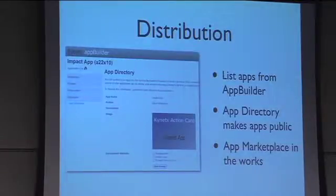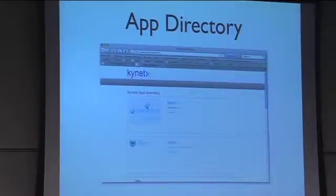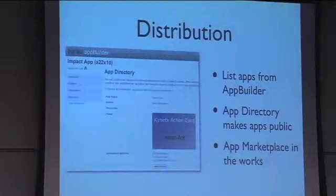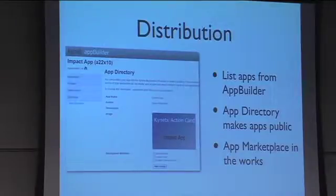A note about distribution: if you go to appdirectory.kinetics.com, this is our basic download site for Kinetics applications right now. Within App Builder you can select different distribution models as you're developing your application — you can say you want it published to App Directory, published as a bookmarklet, and you can also choose to give away your source code.